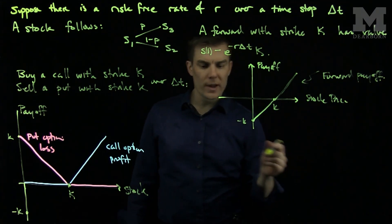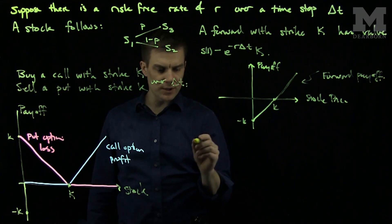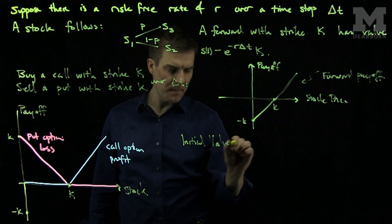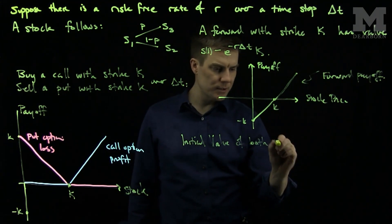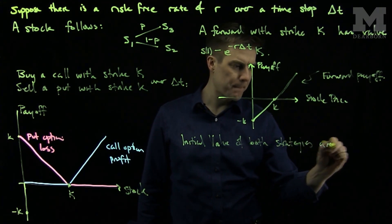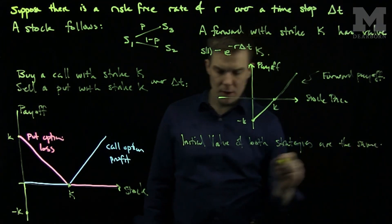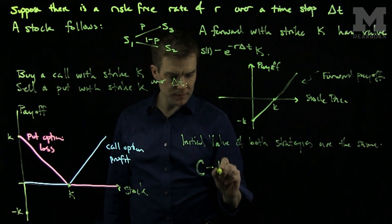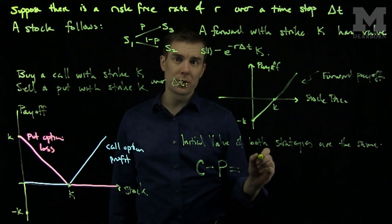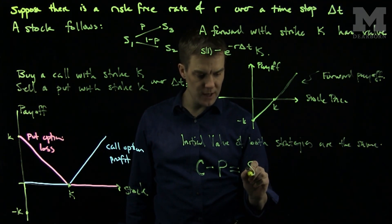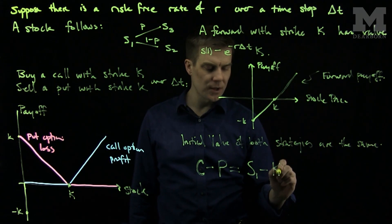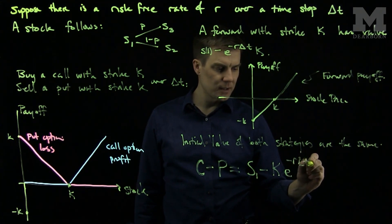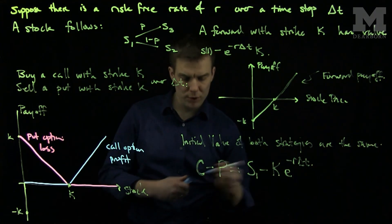Together we can say that these two are equivalent strategies. Therefore the initial value of both strategies are the same. The value of the call minus the loss that has occurred from the put will equal the value of the forward at the initial time. That's our stock price S1, our initial stock price minus the strike price for both the call and put options as well as the forward contract, E to the minus R delta T. This formula here is referred to as put-call parity.